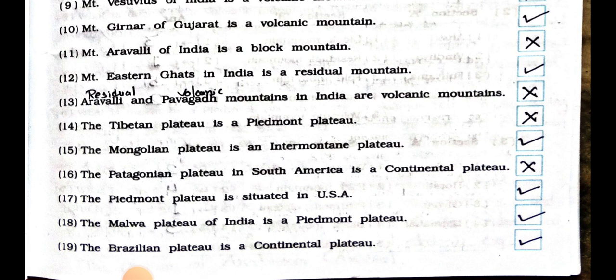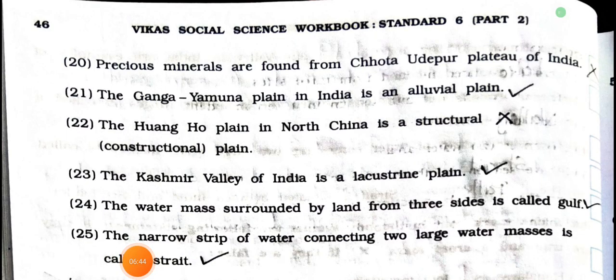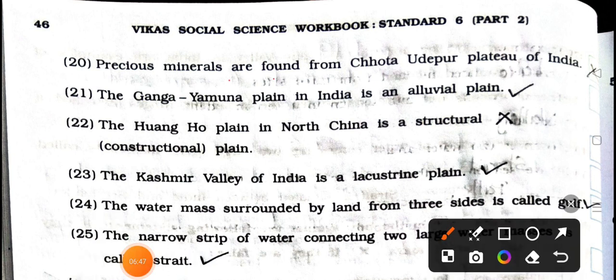Number 15: The Mongolian Plateau is an inter-mountain plateau. True. Number 16: The Patagonian Plateau in South America is a continental plateau. False. Number 17: The Piedmont Plateau is situated in USA. True. Number 18: The Malwa Plateau of India is a Piedmont Plateau. True. Number 19: The Brazilian Plateau is a continental plateau. True.